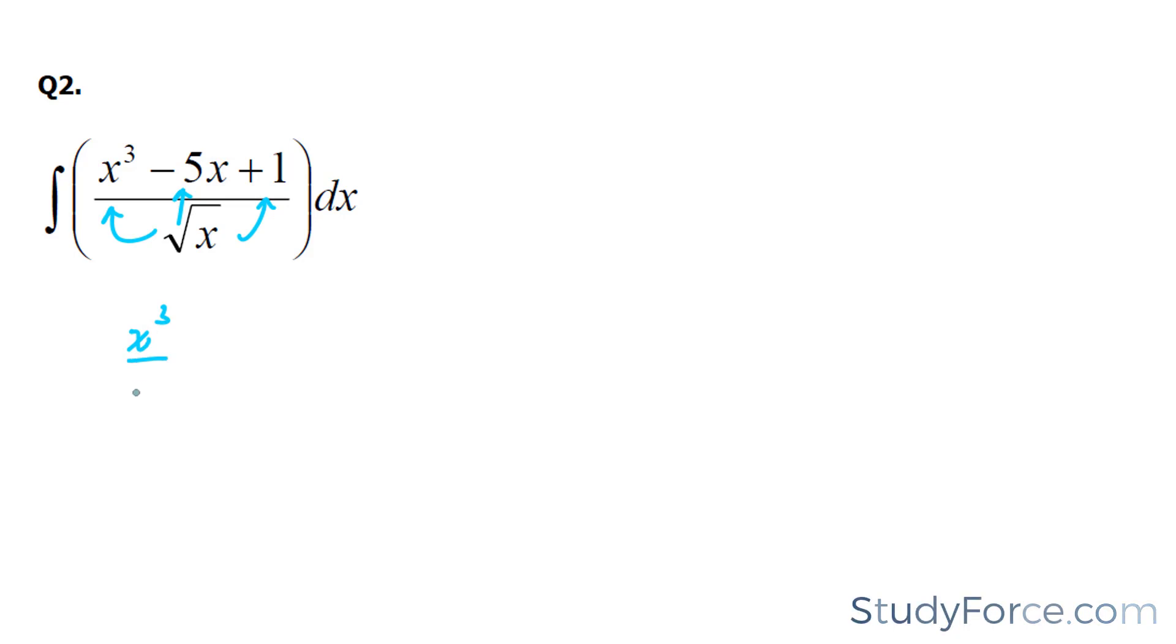x to the power of 3 over x square rooted, minus 5x square root of x, plus 1 over the square root of x. So we're going to need to find the antiderivative for each of these terms. We're going to start with the first one.